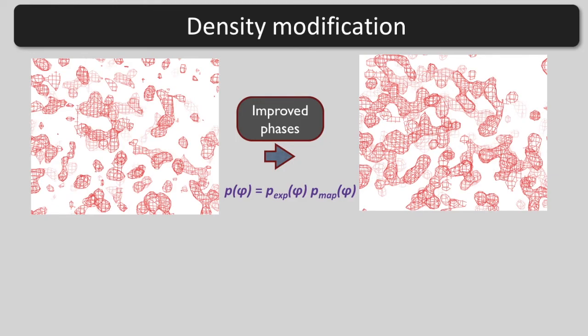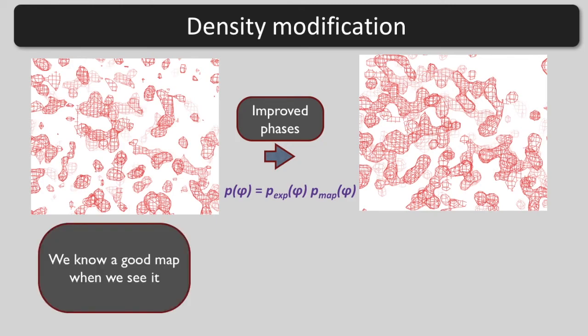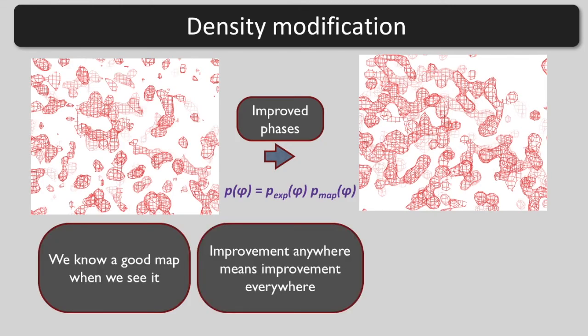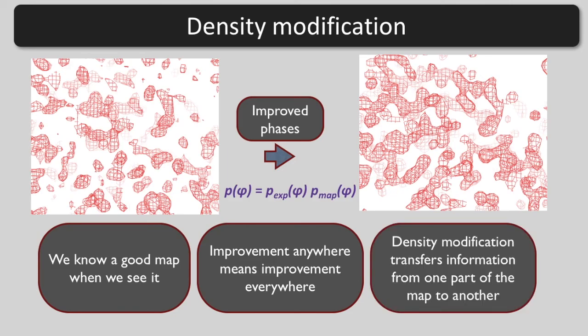To summarize the key points: we know what a good map looks like. If we can improve the phases by improving the map anywhere, we automatically improve the map everywhere. Density modification transfers information from one part of the map to another.